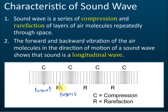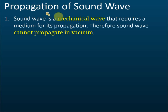Sound wave is a mechanical wave. A mechanical wave is a wave that needs a medium for its propagation. For example, oceanic waves — the waves you see at the seaside — require water to form and move. If there's no water, you can't have oceanic waves. Therefore, oceanic wave is a mechanical wave, and so is sound wave — it must have a medium to propagate.